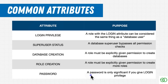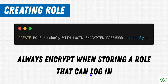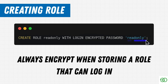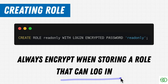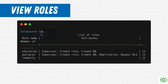Now let's look at creating a role. Here we're creating a role called 'read_only', giving it login ability and encrypting the password — always encrypt the password, always pass 'ENCRYPTED' here — and we're giving it the password 'read_only'. When you encrypt and store a password and give it login ability, you can now log in with that role. If you want to view available roles, use the backslash-du command, which shows you the list of roles and their attributes.